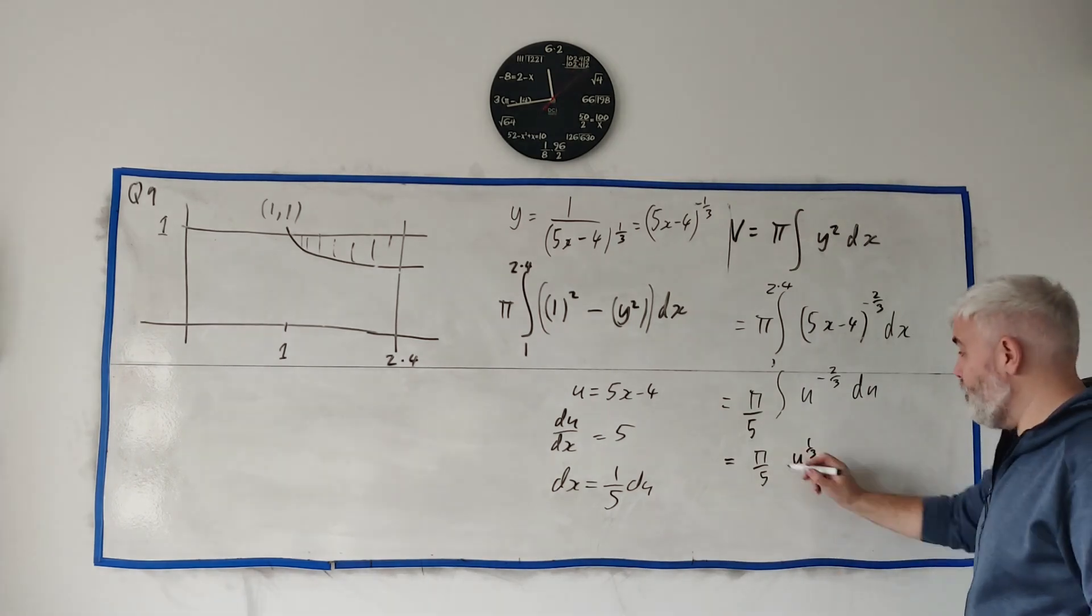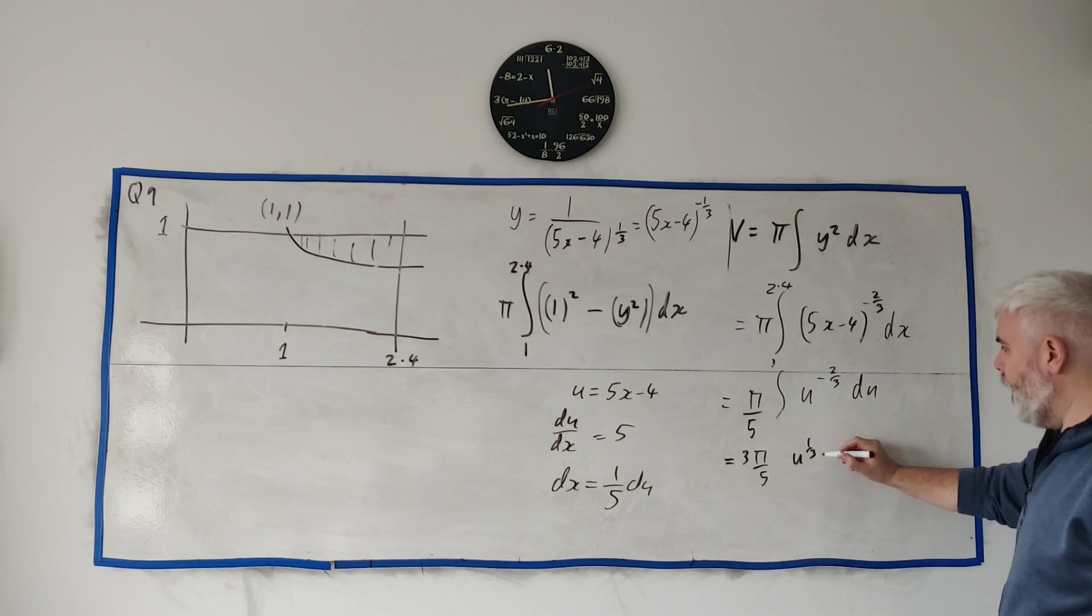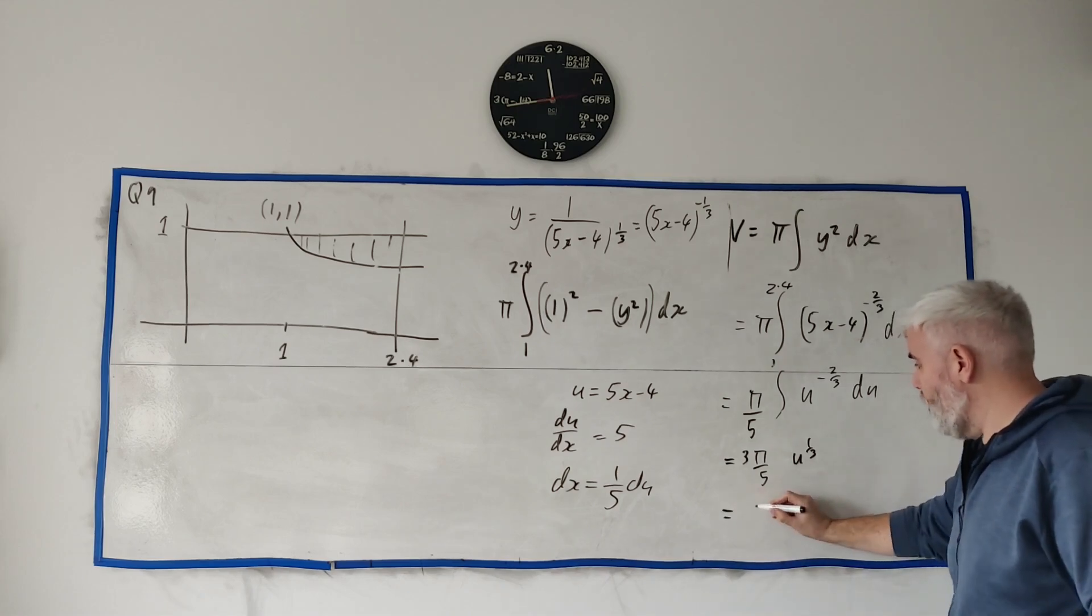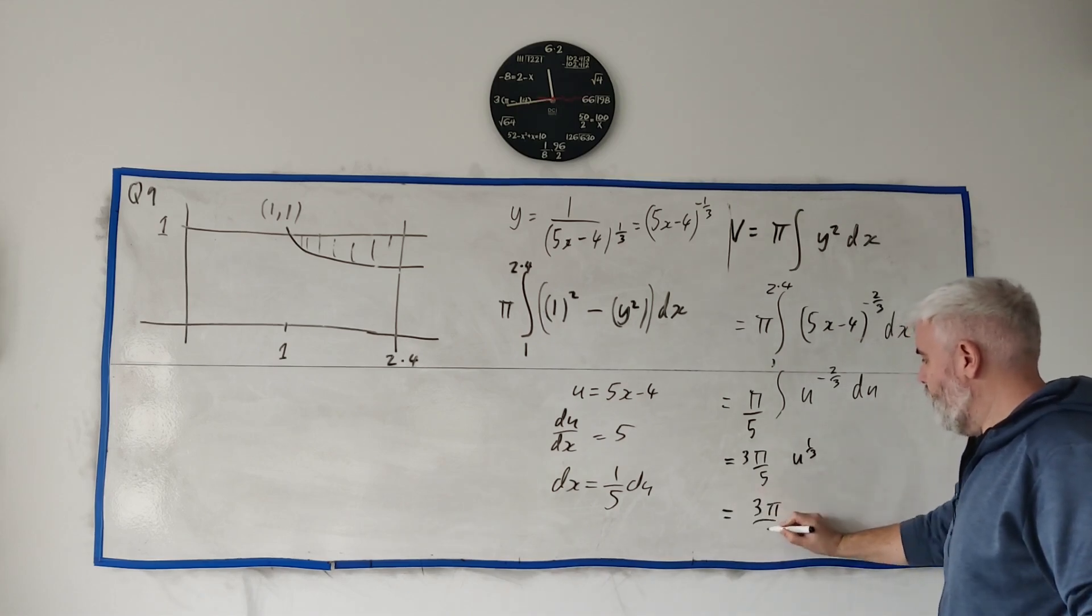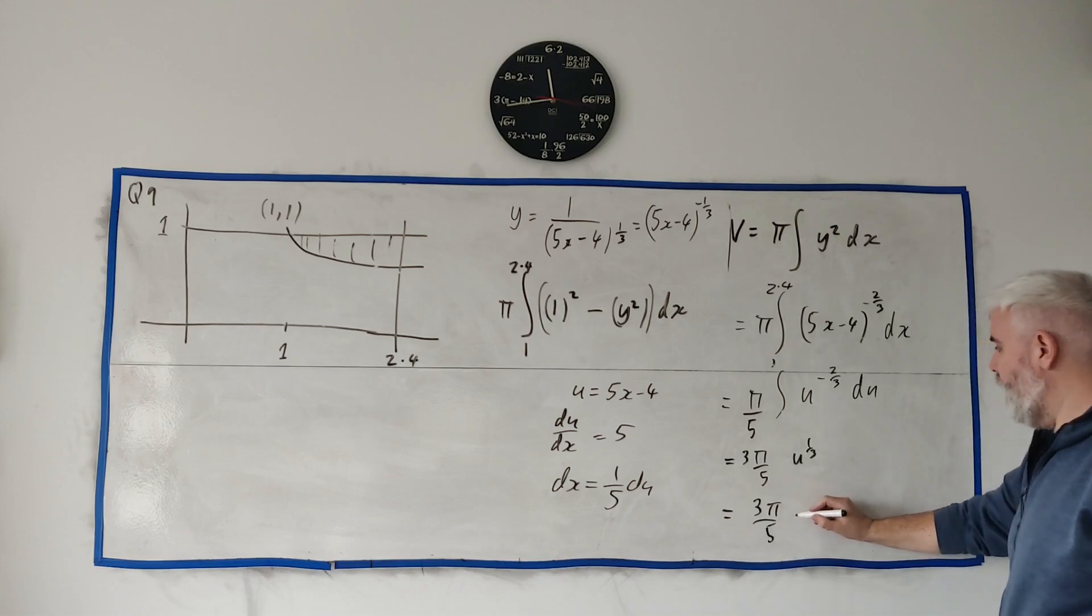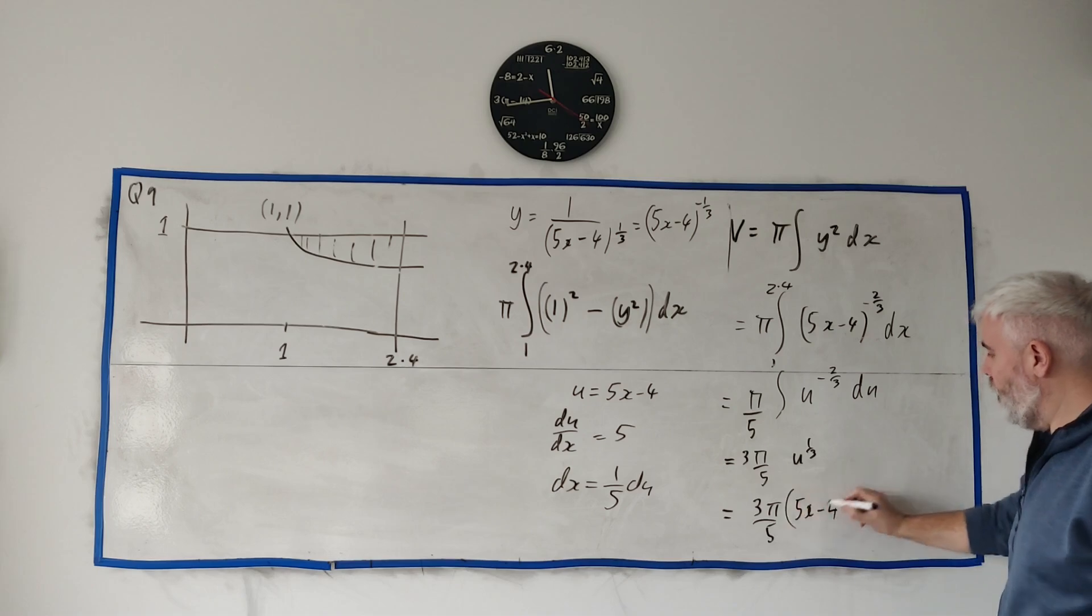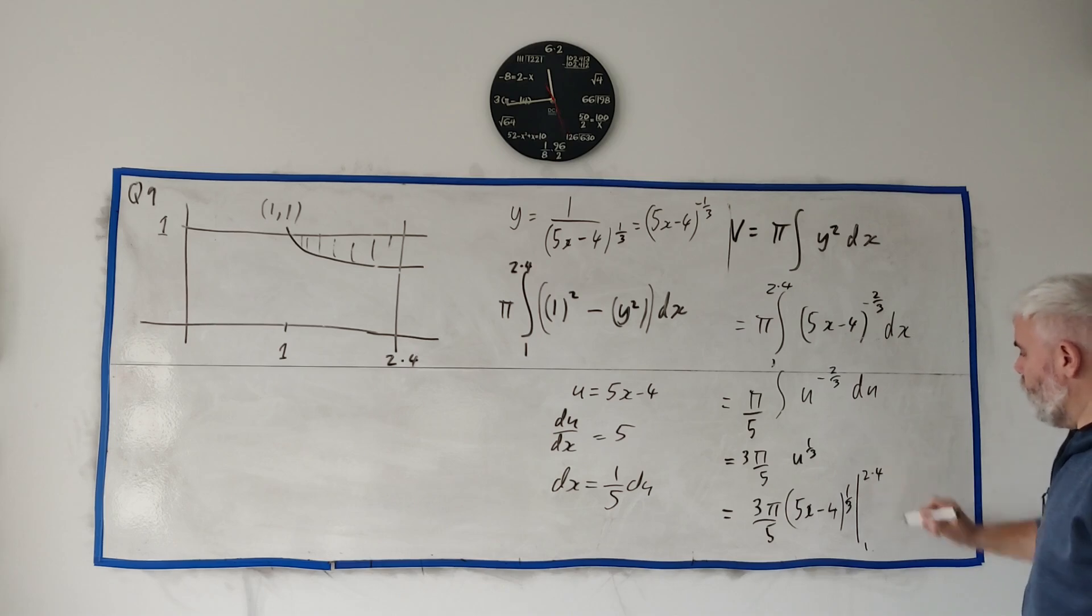And we know what u is though, so we rewrite this as pi over 5 times - instead of u it's 5x minus 4 to the power of 1/3. And we also know what numbers should have gone in, 1 to 2.4, so we just need to fill these numbers in. I'll do that over there, but let me just go over one more time how you do this in your head quickly.